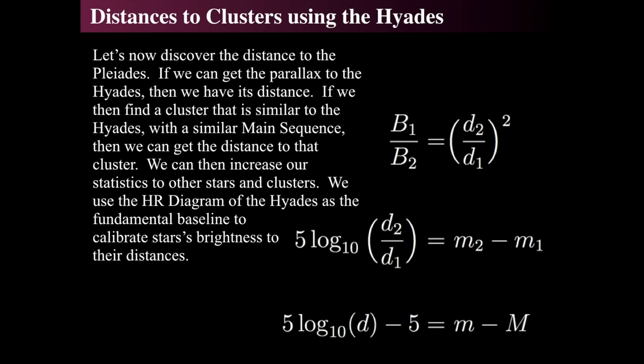So two stars that are exactly the same type, but at different distances, have brightness determined by their distances. The inverse square law means that if brightness of star 1 is 100 times the brightness of star 2, and they're the same type of star, then star 2 must be 10 times further than star 1.